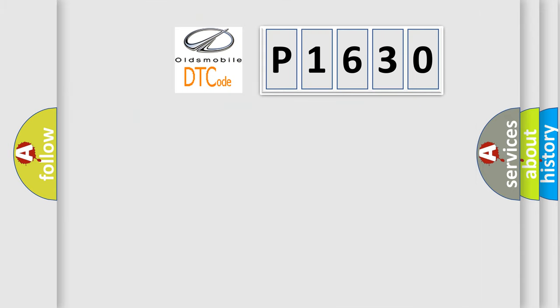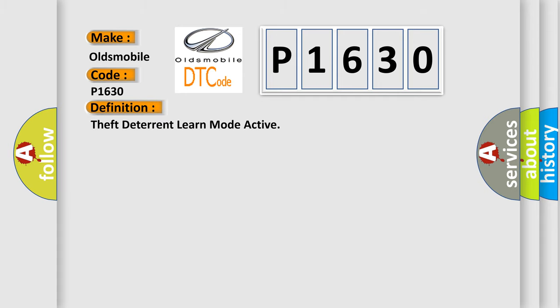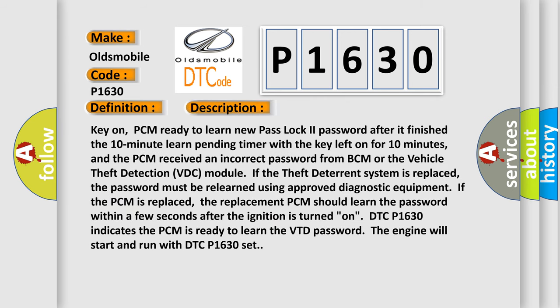So, what does the diagnostic trouble code P1630 interpret specifically for Oldsmobile car manufacturers? The basic definition is: Theft deterrent learn mode active. Key on — PCM is ready to learn new PassLock 2 password after it finishes the 10-minute learn pending timer with the key left on for 10 minutes.